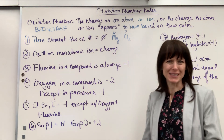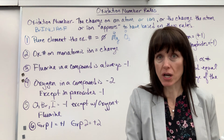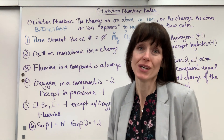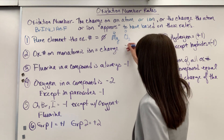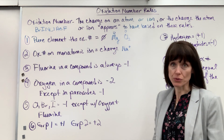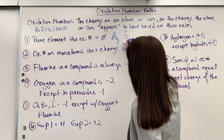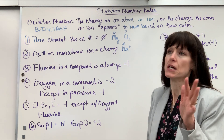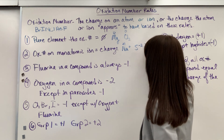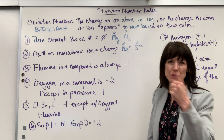Rule number two, super easy: the oxidation number on a monoatomic ion is always the same as the charge. A monoatomic ion just means one atom with a charge. For example, a sodium ion with a plus charge loses one electron to have a full octet, so its oxidation number is plus one. Let's do another: sulfide ion has a negative two charge, so its oxidation number is negative two.